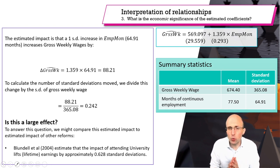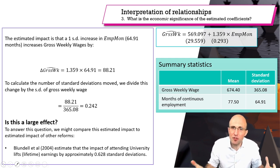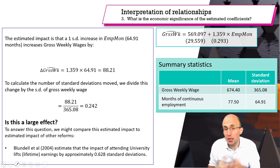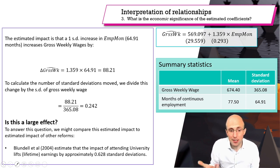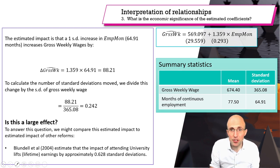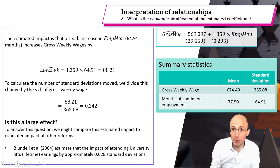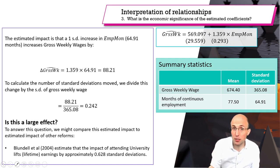The final step is to compare this effect with other estimated impacts. Blundell et al.'s 2004 paper estimates the impact of attending university is to increase lifetime earnings by about 0.628 standard deviations. Our estimated effect of a one standard deviation increase in months continuously employed is less than that, but of the same order of magnitude, so it's looking like a relatively large effect.